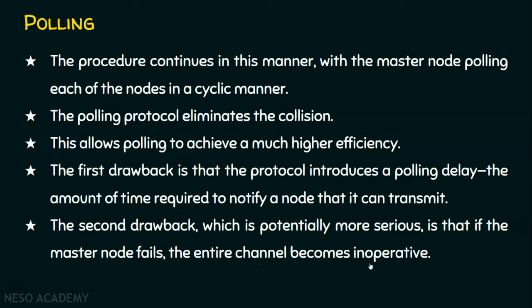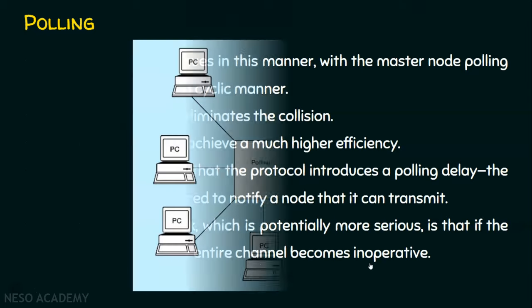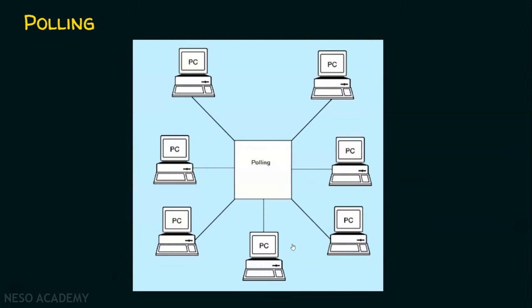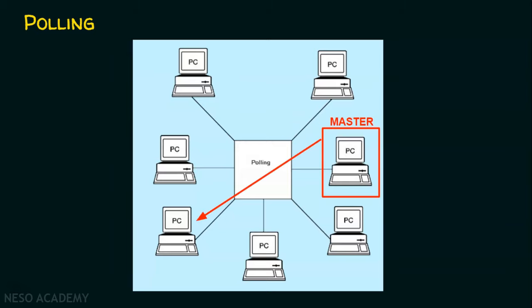Let's see an animation — it will be more clear for you to understand. In this example, we have seven nodes. As mentioned, some node will be elected as a master node. Now, what this master node does: first, it has to poll some node and gives chance for that node to transmit the data. Once done, it has to choose another node to send the data. Likewise, this process is continued. Now it is choosing this node, and this node will start transmission. After that, the master node will elect the next node, then gives chance to other nodes in a cyclic manner. This continues till all the transmission is completed.